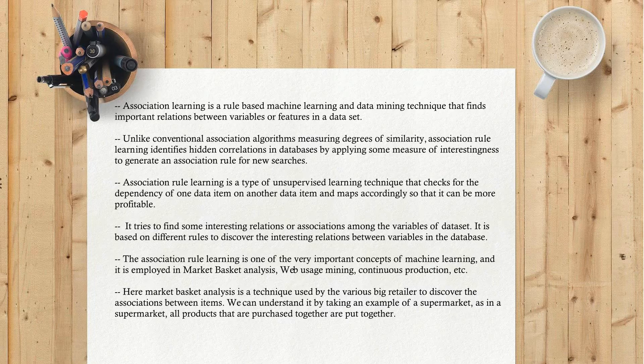Association rule learning is a type of unsupervised learning technique that checks for the dependency of one data item on another and maps accordingly so it can be more profitable. It tries to find interesting relations or associations among variables in the dataset based on different rules to discover interesting relations between variables in the database.